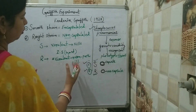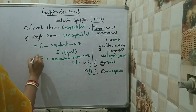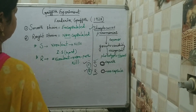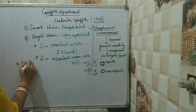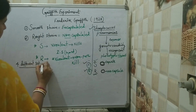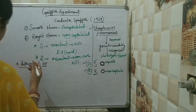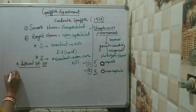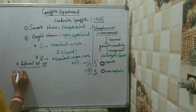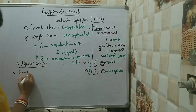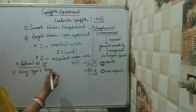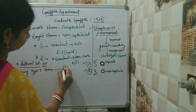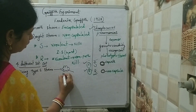Frederick Griffith set four different experimental conditions. In the first set, he took a live mouse and injected living type S strain into the live mouse.